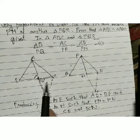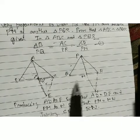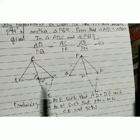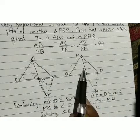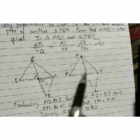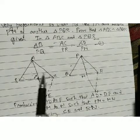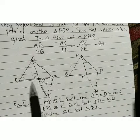Similarly, for triangle PQM and NRM, using the same method we show these triangles are congruent. Then by CPCT we get PQ = NR and angle Q = angle NRM. This is equation 2.